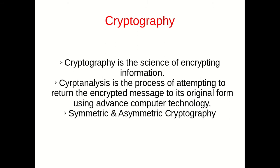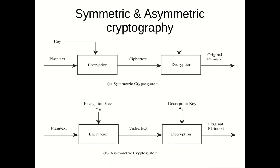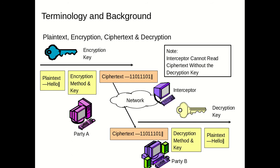Going forward, let us have an overview of cryptography. Cryptography is a science of encrypting information. We've got two types of cryptography: symmetric and asymmetric. Symmetric cryptography uses the same key for both encryption and decryption, and asymmetric cryptography uses different keys for encryption and decryption. Let's learn some terminologies: plain text, encryption, ciphertext, and decryption. This diagram gives us an overview of how the ciphertext is transferred, how the plaintext is encrypted, and how the decrypted message reaches party B.